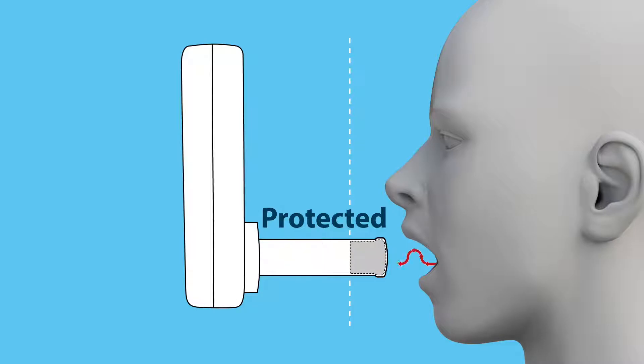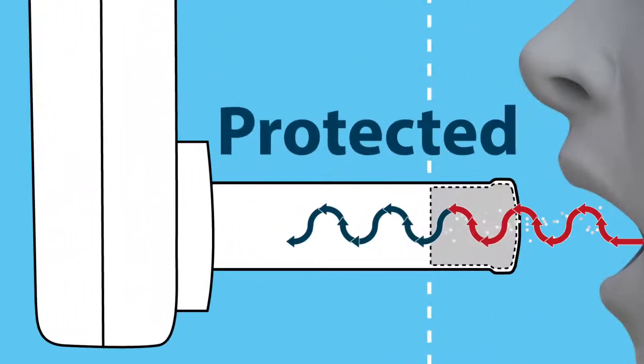Contaminated air stops at the filter of Safe Breath and clean air passes down to your device. Safe Breath not only protects your device, but it will also protect the subject blowing.